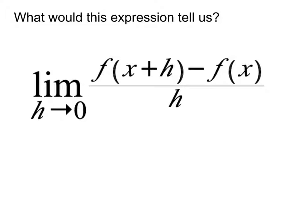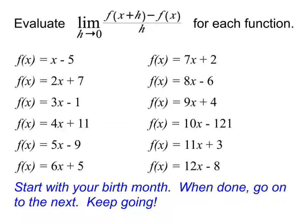Some of us might start seeing what this could mean, but I think we need to do a little bit of work to see what that's going to be. So we are going to evaluate what this limit would equal for a whole bunch of different expressions. Here are 12 different expressions, and we are going to find the limit as h approaches zero of the difference quotient for every single one. There are enough of us here that we don't have to do every single one ourselves — we're going to divide up the work.